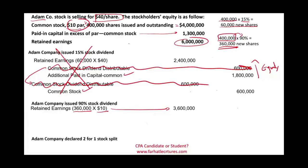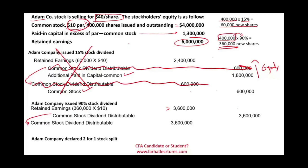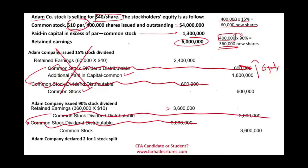We credit Common Stock Dividend Distributable for $3.6 million. Since we are issuing the stock dividend exactly at par, there is no additional paid-in capital — it is just two entries. Then when we actually distribute the stock to the shareholders, we debit Common Stock Dividend Distributable and credit regular Common Stock. What ended up happening is we issued stock and reduced retained earnings — the same concept as before.